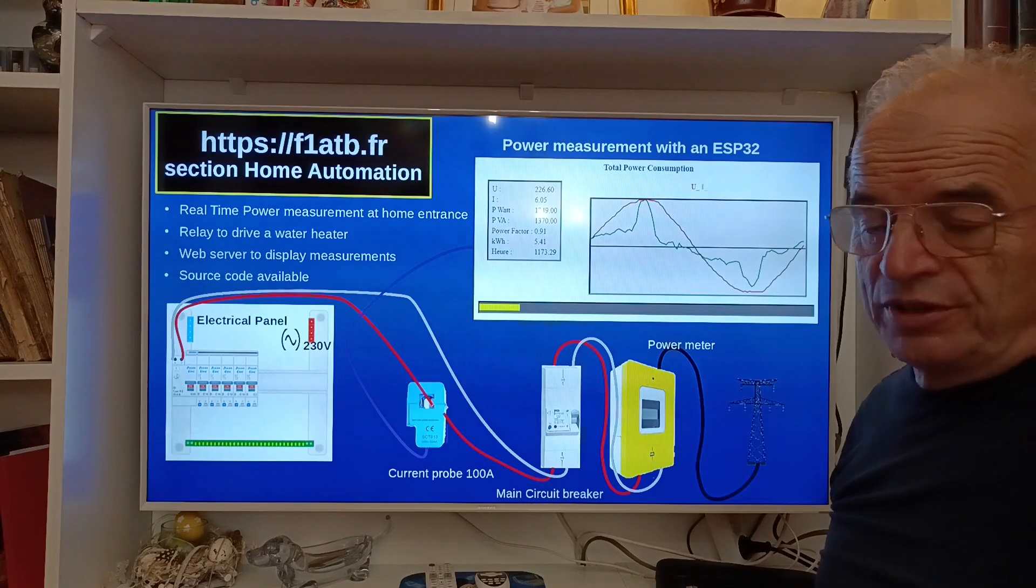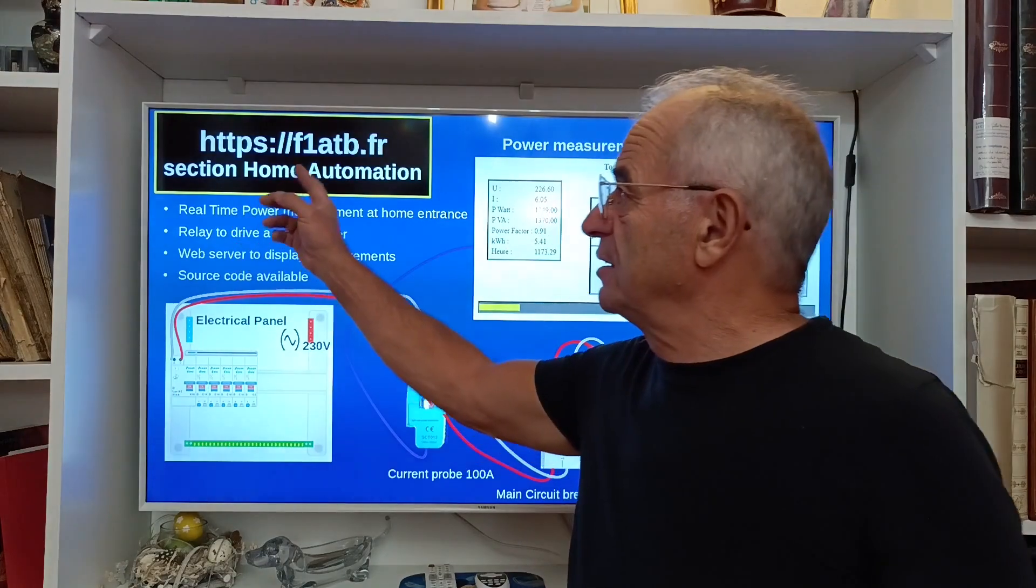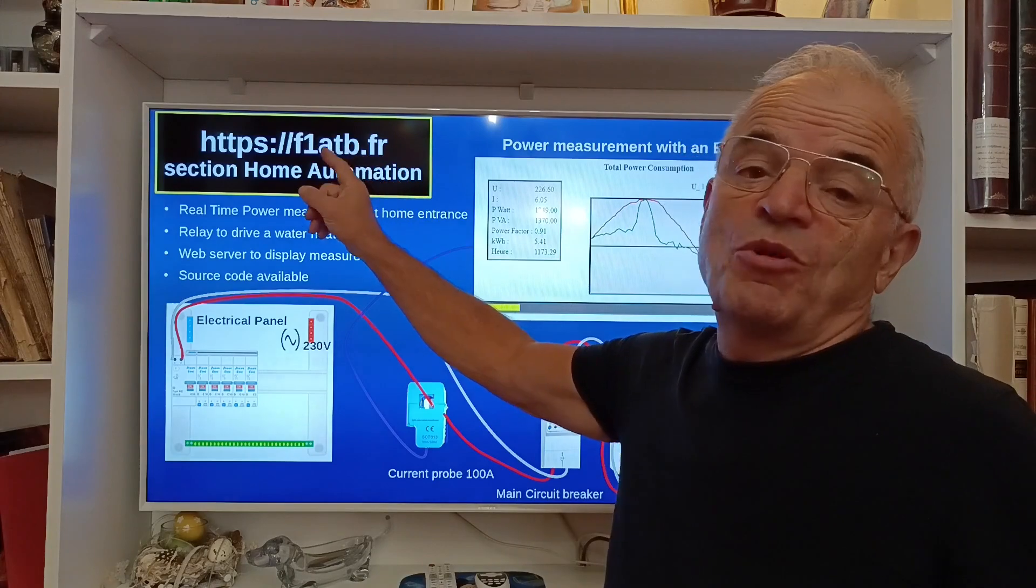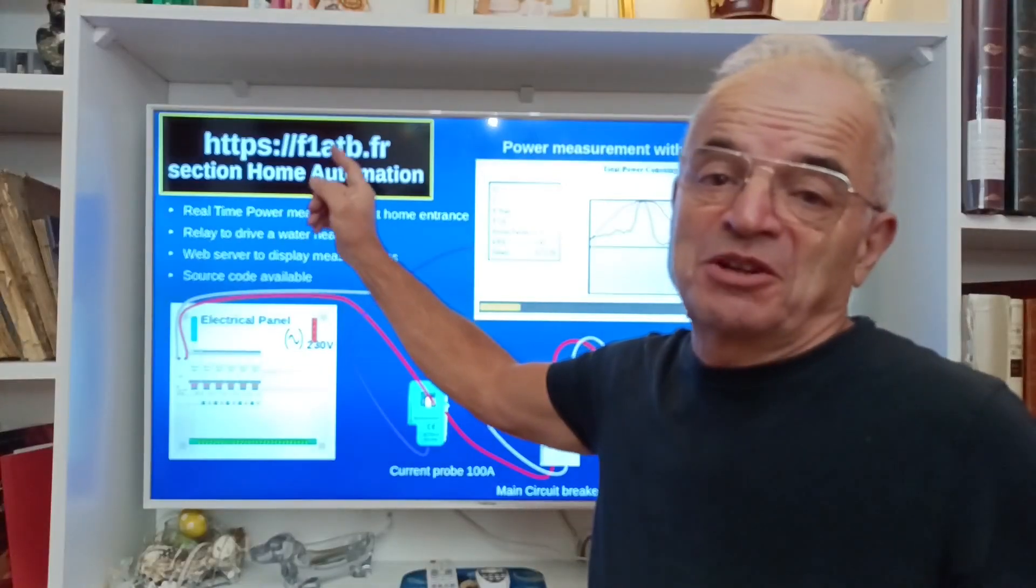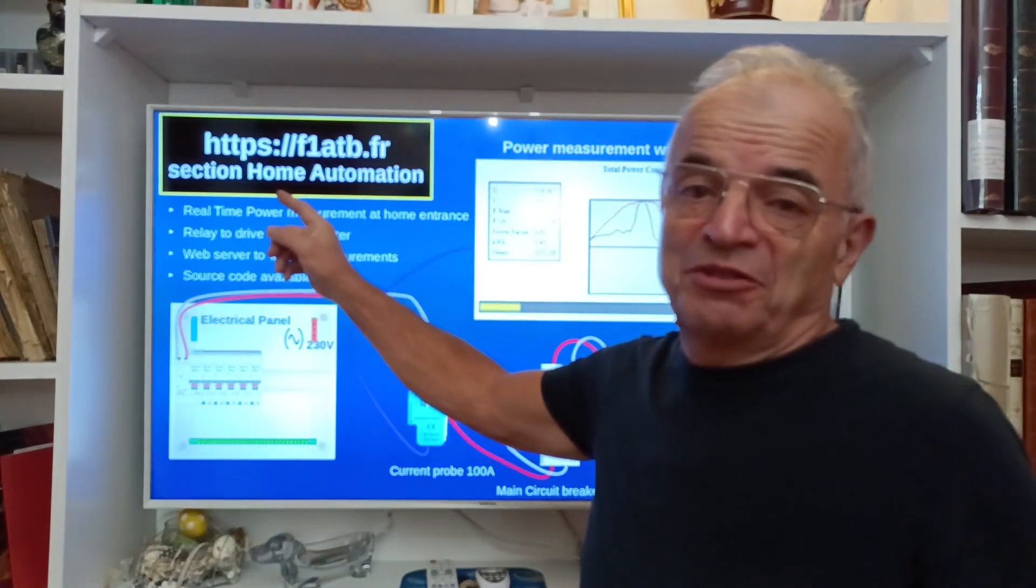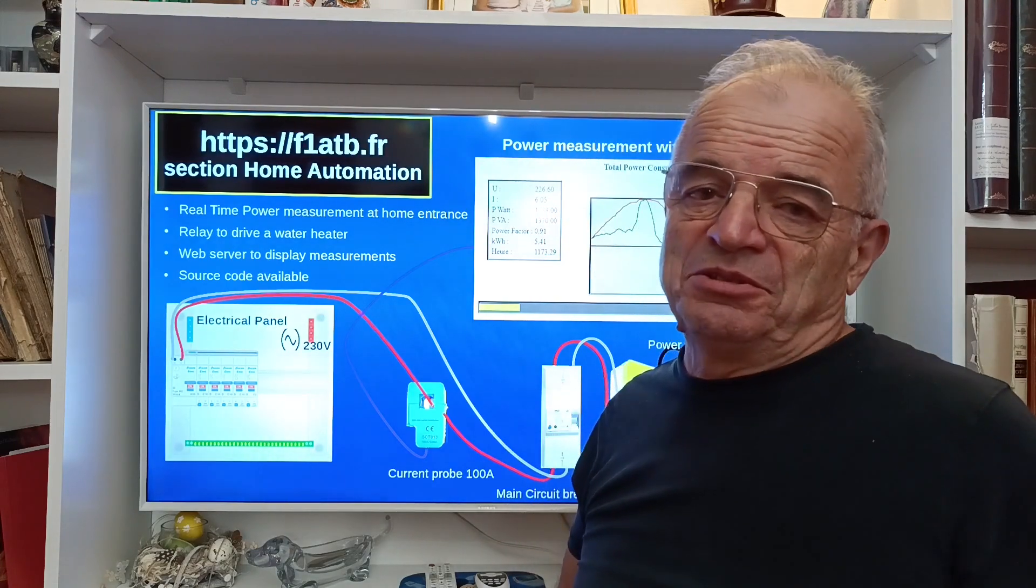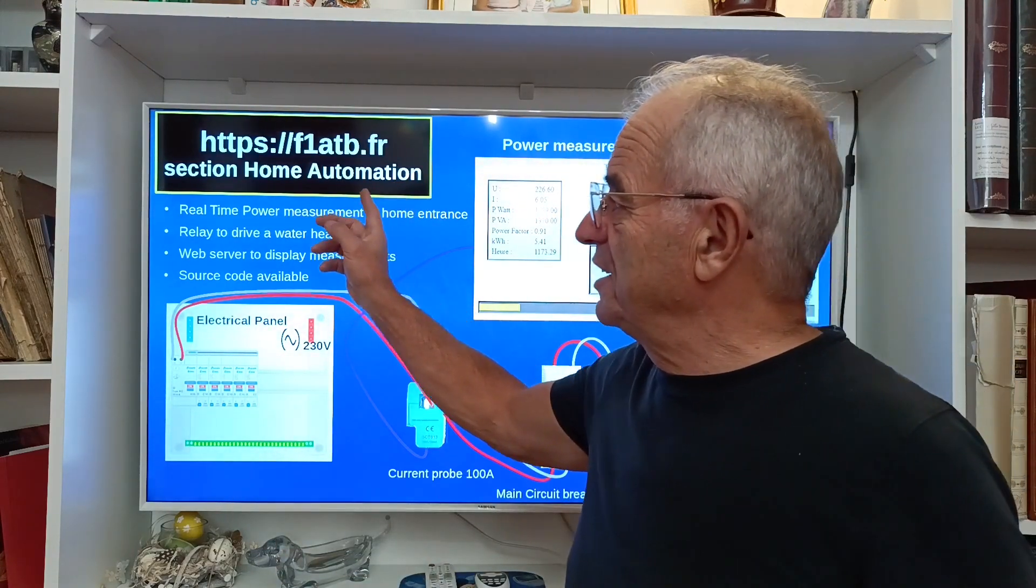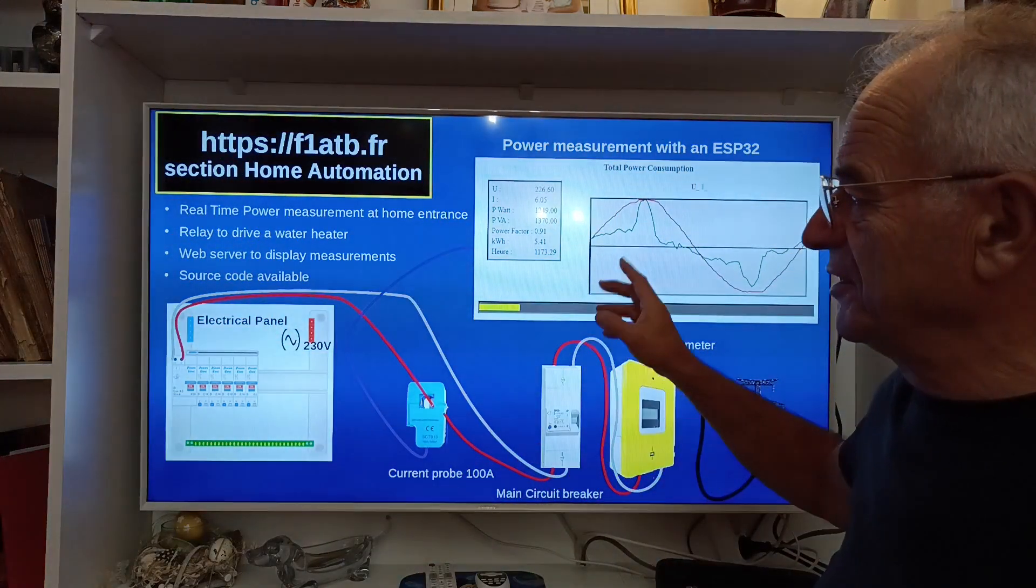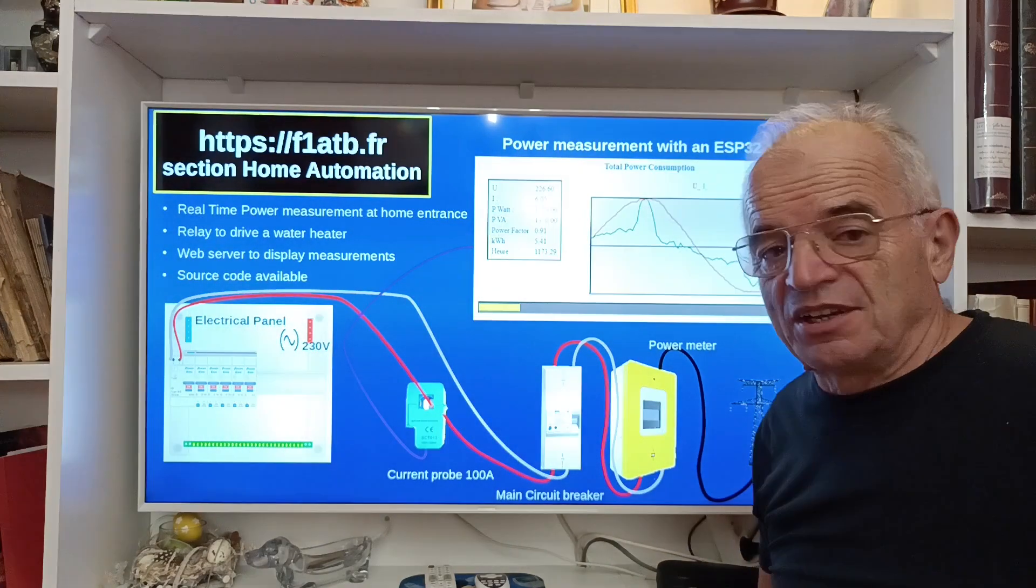If you want more information of this system, you can go on my website, https://f1atb.fr. F1ATB is my call sign, amateur radio call sign, because it's also one of my hobbies. I have articles dedicated to amateur radios but also articles dedicated to home automation. So go into this section and you will find all details about the system I just described in this video.